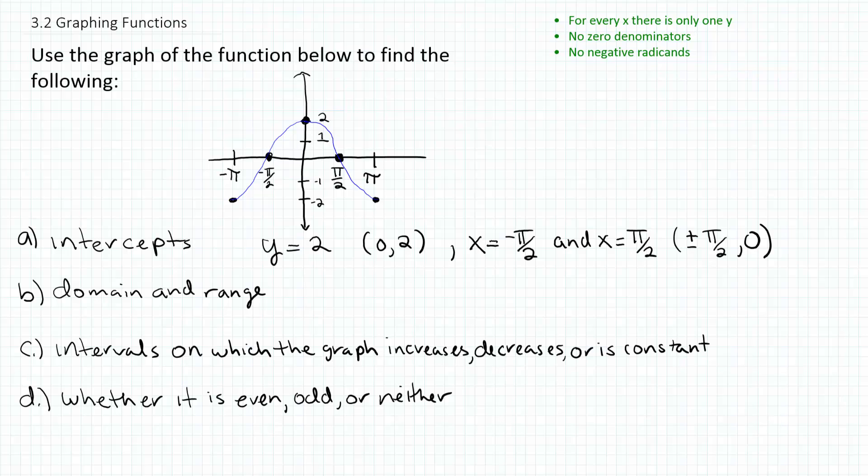Alright, so let's look at the domain and range for the function next. Remember that the domain for the function are all the x values for the points that exist on the graph of the function, and the range is basically all the y values that exist for the points of the graph on the function. So basically when I look at the range, I'm looking at the y values, and when I'm talking about the domain, I'm looking at the x values.